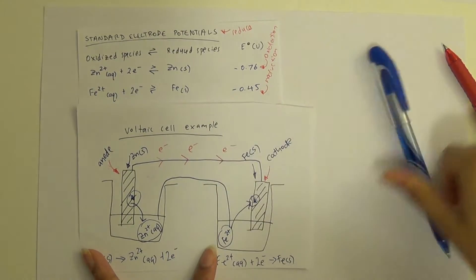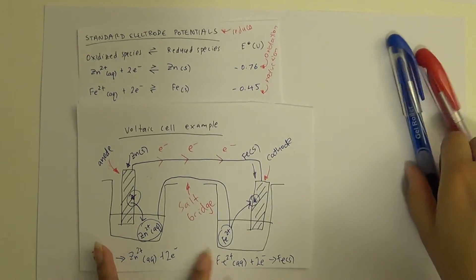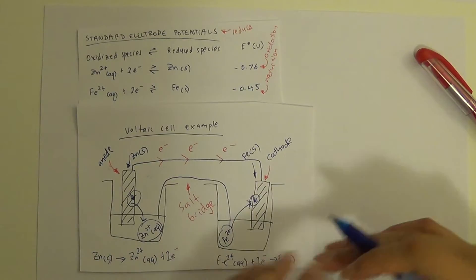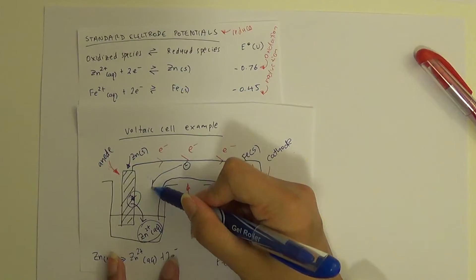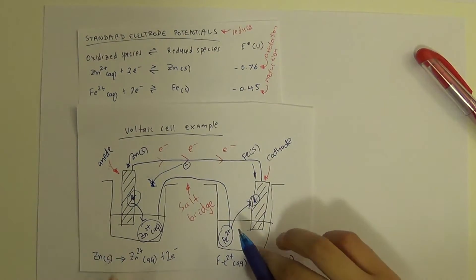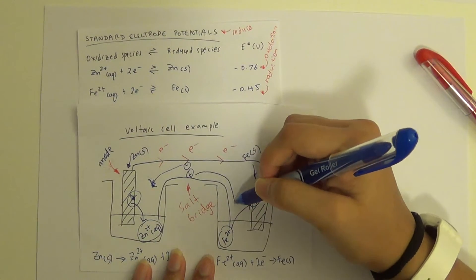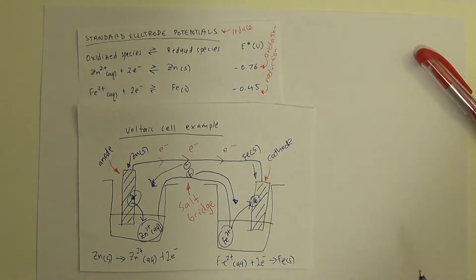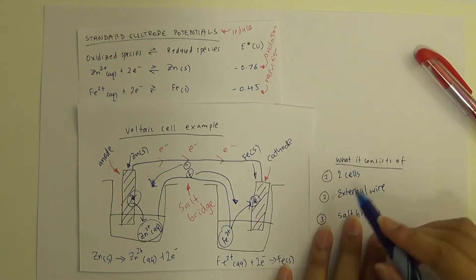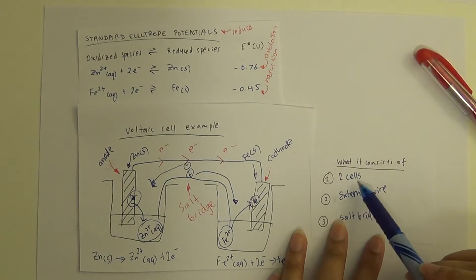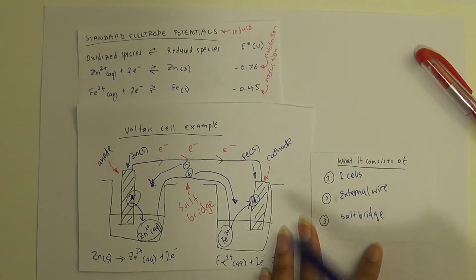The salt bridge is basically a gel. Because the anode cell is becoming more and more positive, we need to get rid of this charge buildup, so the negative ions — the anions — from the salt bridge travel to the anode. Similarly, because the cathode is becoming less positive, the positive ions — the cations — from the salt bridge travel to the cathode to neutralize the charge.